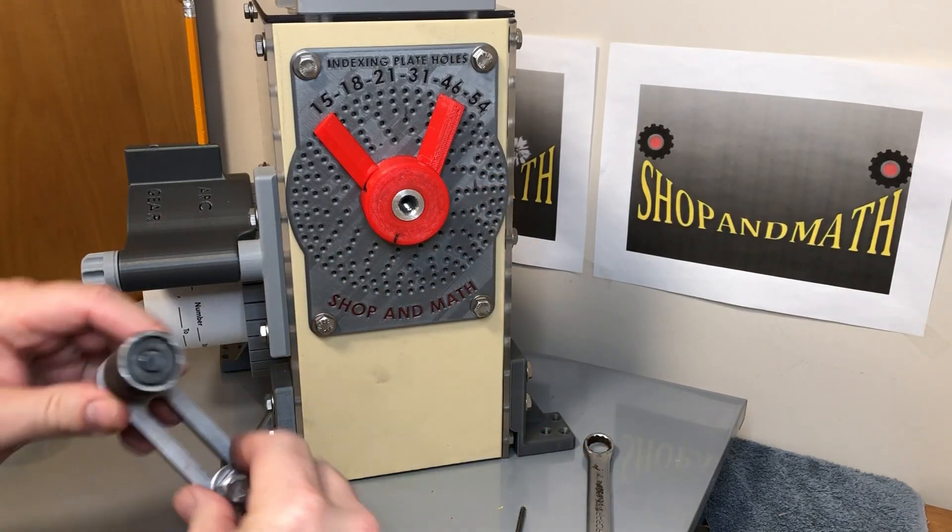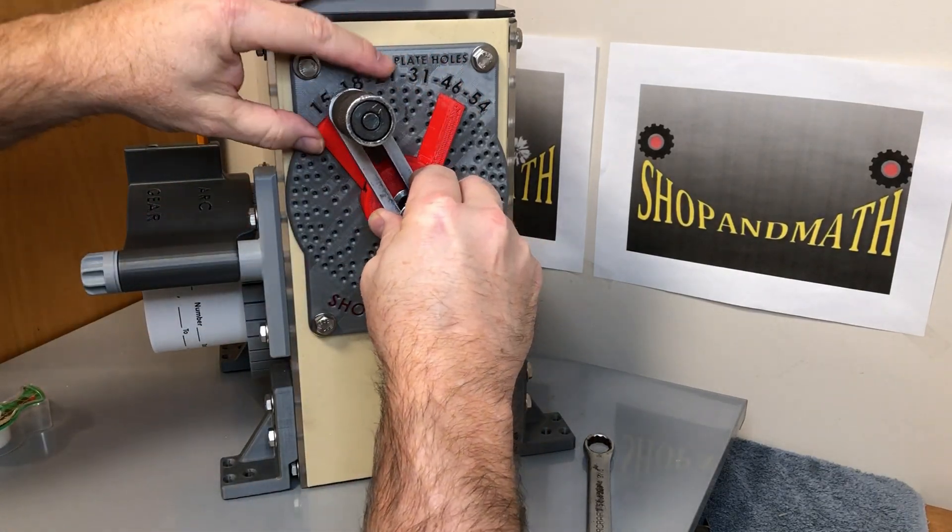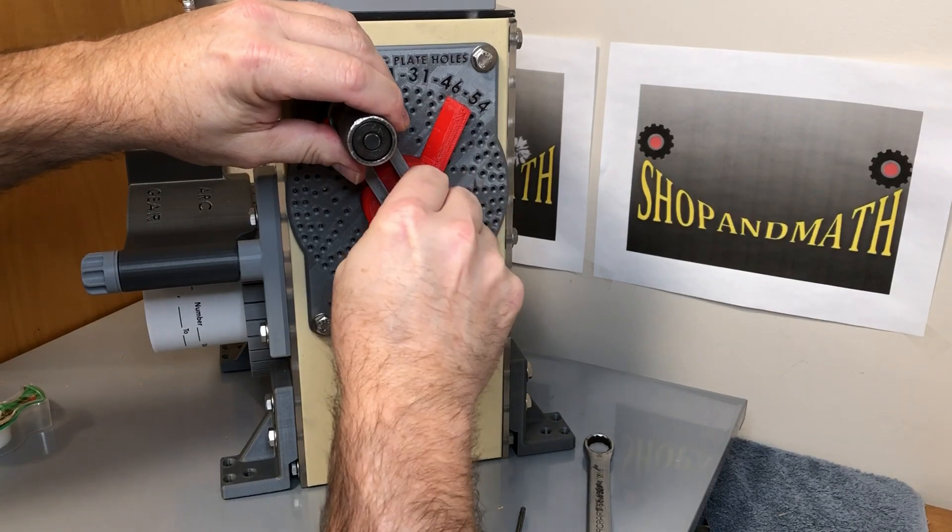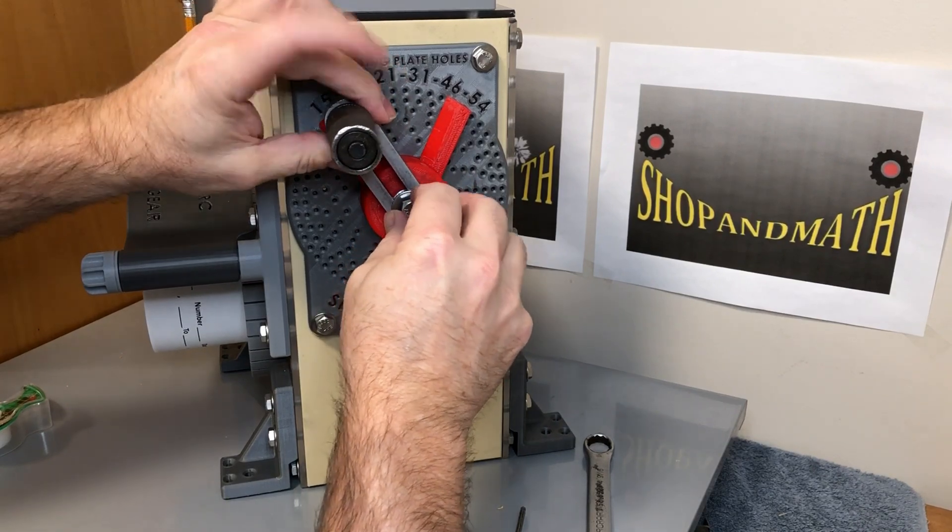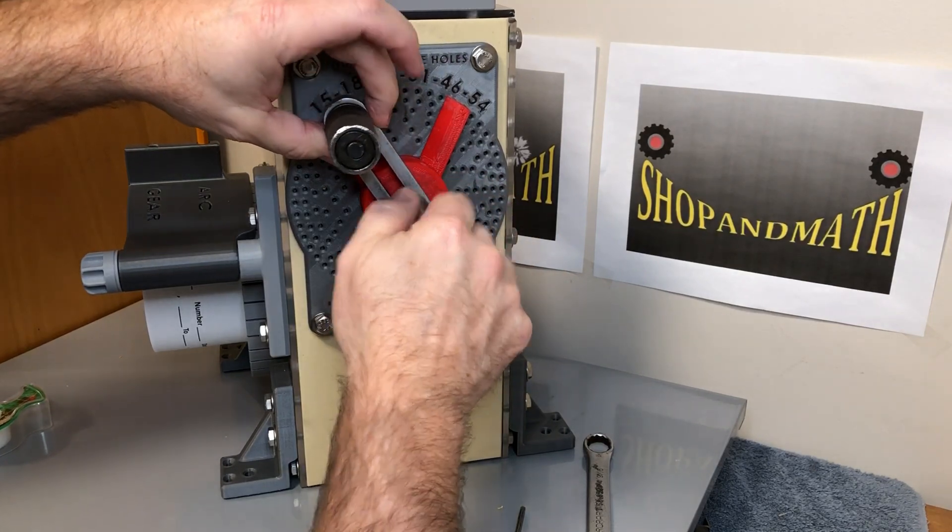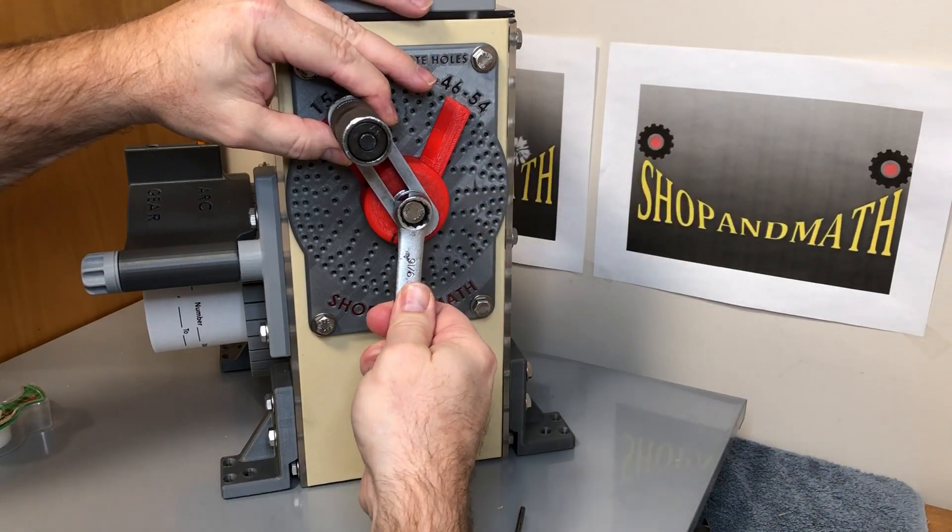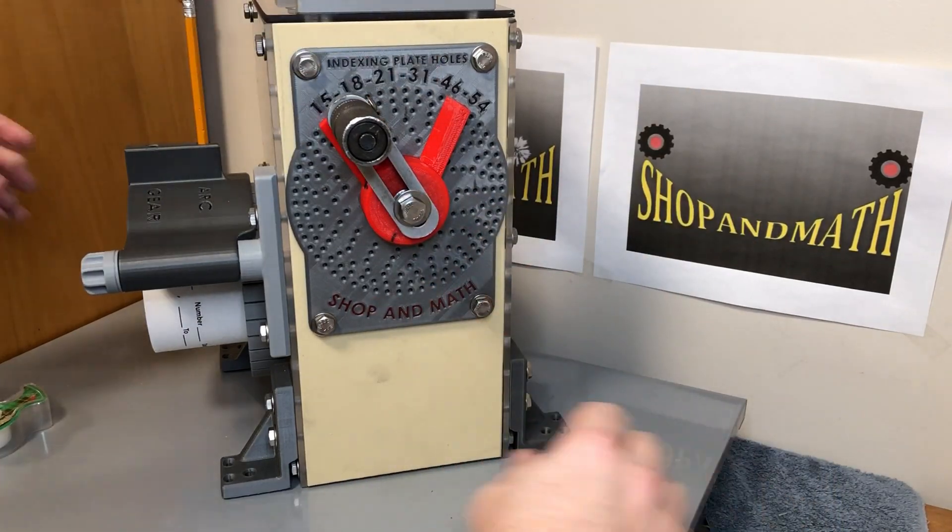So now let's put this on our 54 hole pattern which is our outer pattern. So we put the pin in first to make sure that we're on the right arc. Give that a nip down.